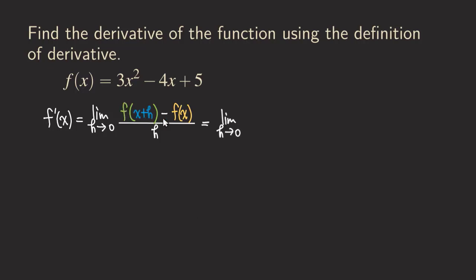So now this f of x plus h — we are going to copy down the function. We have three blank, so put it as a blank, and then minus four, and then blank again, and then plus five. As you can see from the color, this is only for this first function here, f of x plus h. And then we plug in x plus h into the blanks, so we get x plus h and then x plus h.